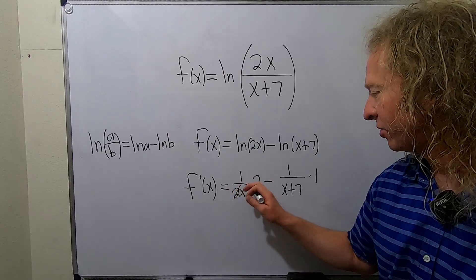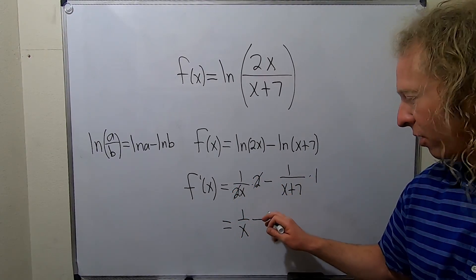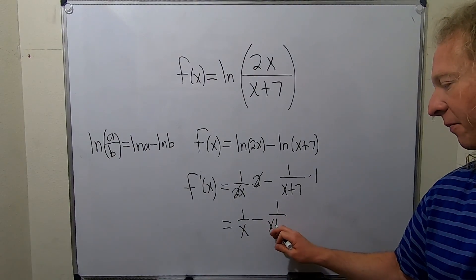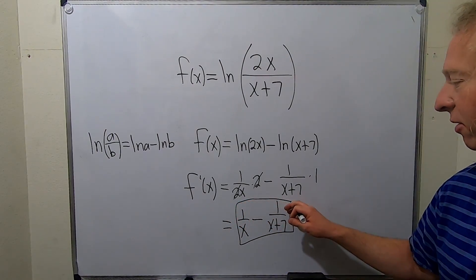Last thing to do is cancel these and rewrite this. This is 1 over x minus 1 over x plus 7. And that is the final answer.